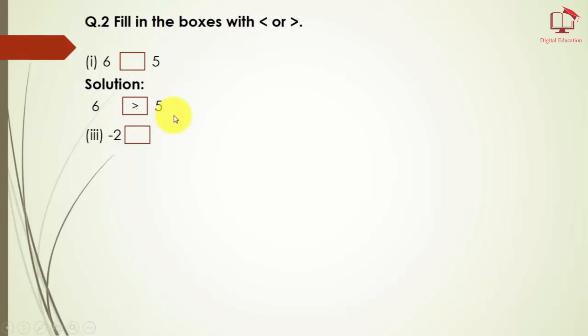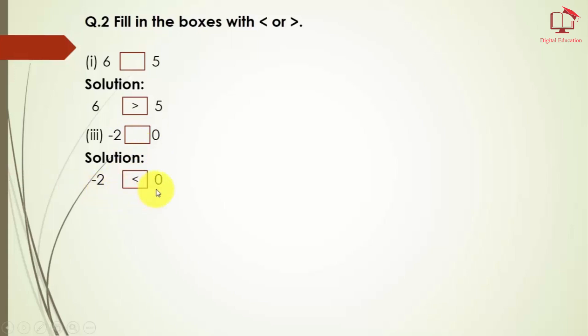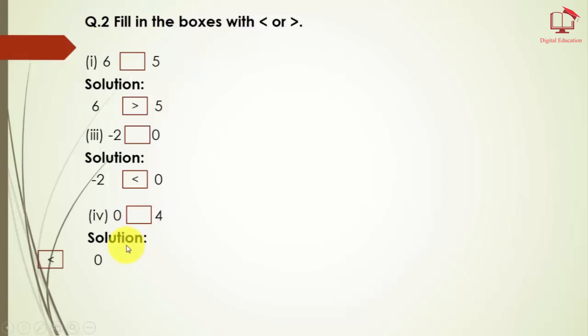Part number 3: we have minus 2, a box, and then 0. Minus 2 is less than 0, so we write here minus 2 less than 0. Question number 2, part number 4: we have numbers with a box and we assign the operators. Here 0 is less than 4, so we write 0 less than 4.